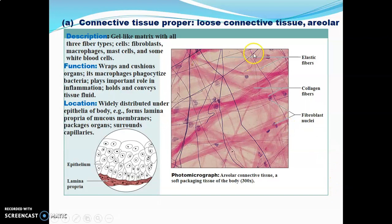We start with areolar tissue. Like any connective tissue, it has cells — examples include fibroblasts, macrophages, mast cells, and white blood cells — along with a gel-like extracellular matrix and fibers. The functions of areolar tissue are: it wraps and cushions organs, contains macrophages that protect against microbes, plays an important role in inflammation, and holds and conveys tissue fluid.